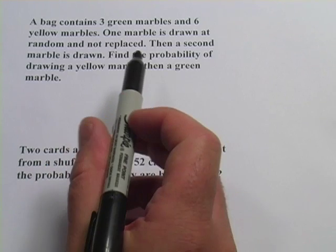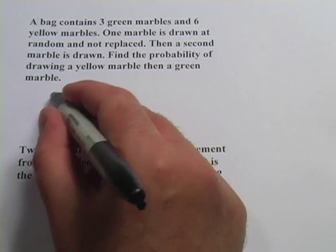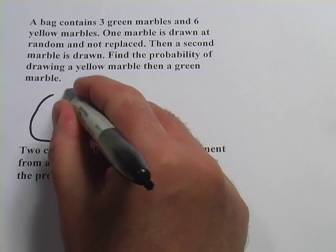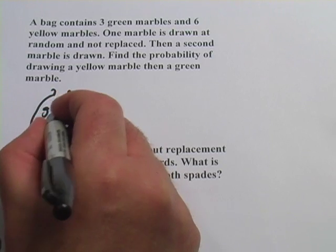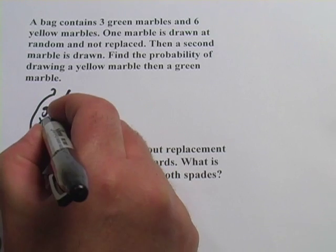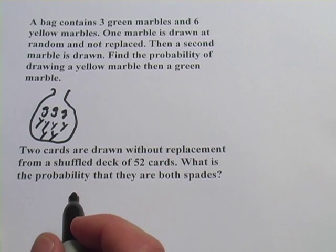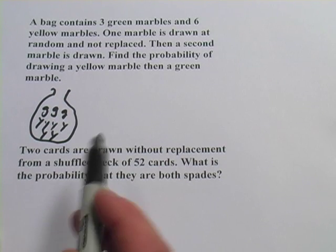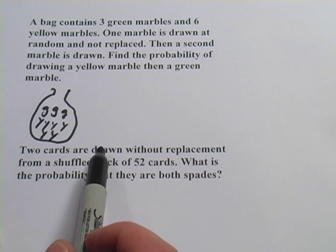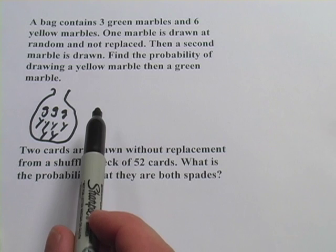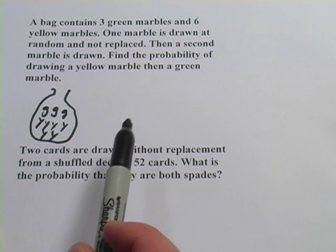It says a bag contains 3 green marbles and 6 yellow marbles. Let's see, here's our bag, and we've got 3 green marbles and 6 yellow. One marble is drawn at random and not replaced. So you're taking something out and chucking it away. Then a second marble is drawn and they want us to find the probability that you draw a yellow marble and then a green marble.